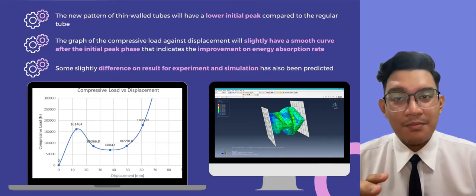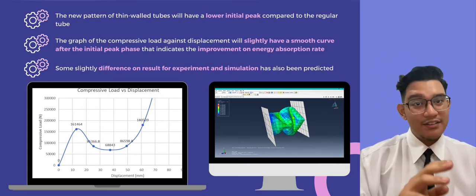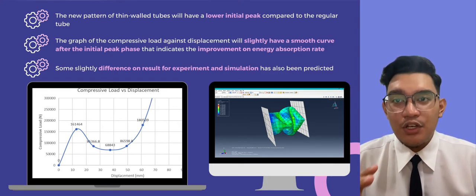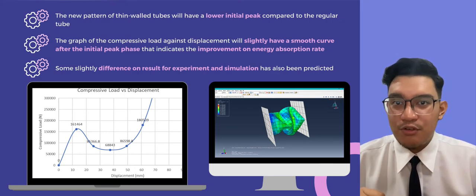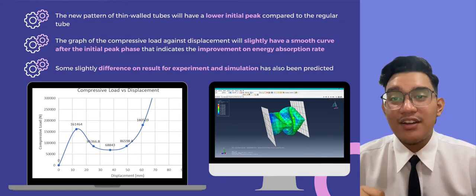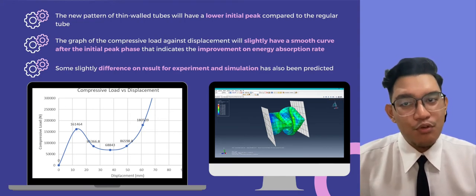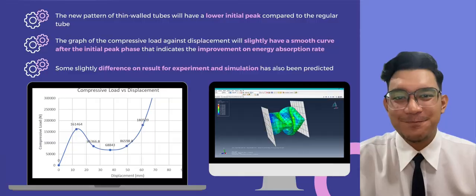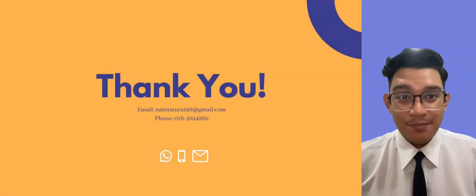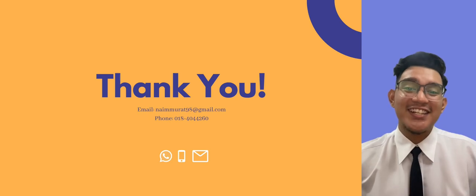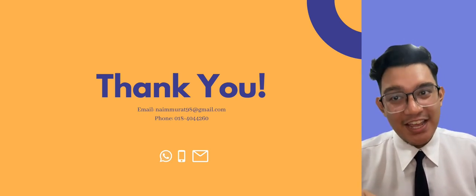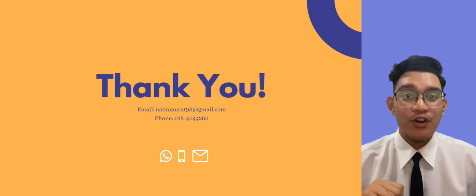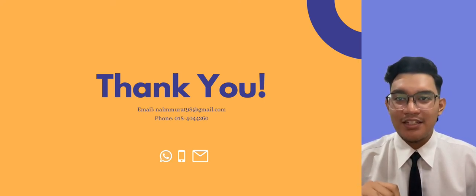Lastly, some slight differences in results between the experimental and simulation data are predicted, due to the material used in real life not being identical to the input data in the simulation, such as yield strength. That's all for my final year project proposal presentation. Thank you for listening. If you have any concerns or questions, please reach me through my email or phone number stated in the presentation. Thank you.